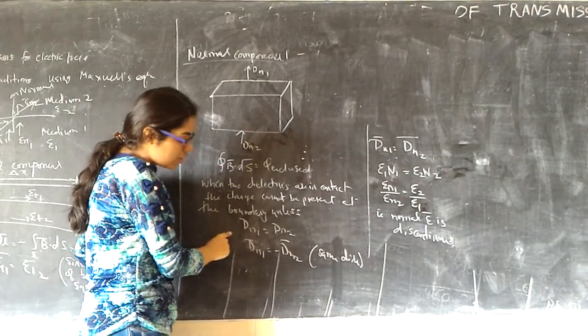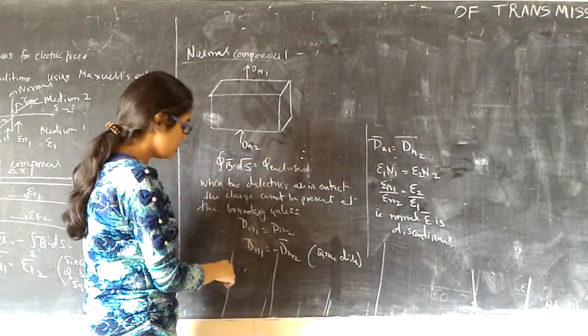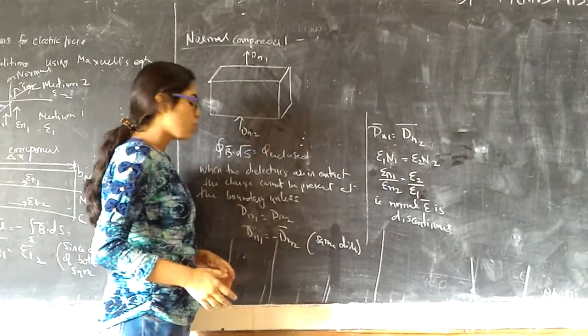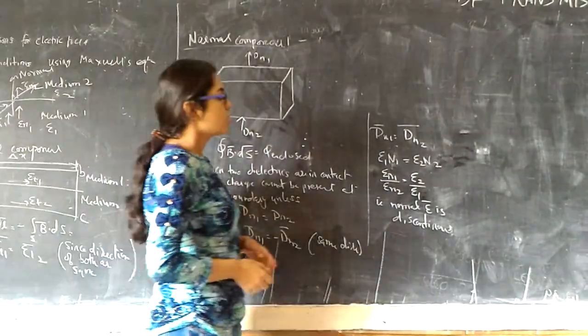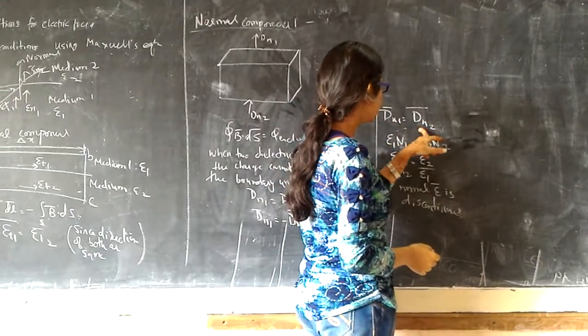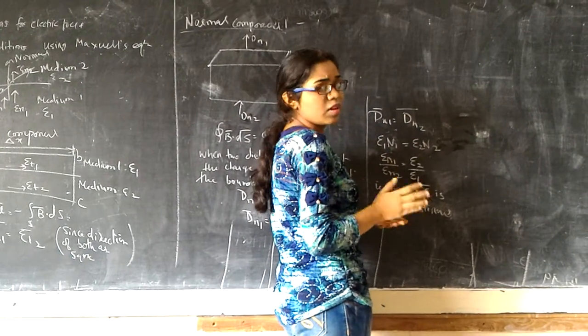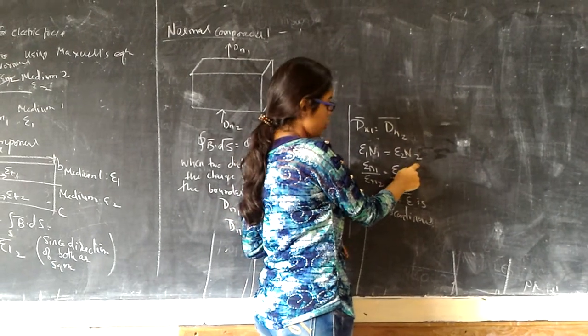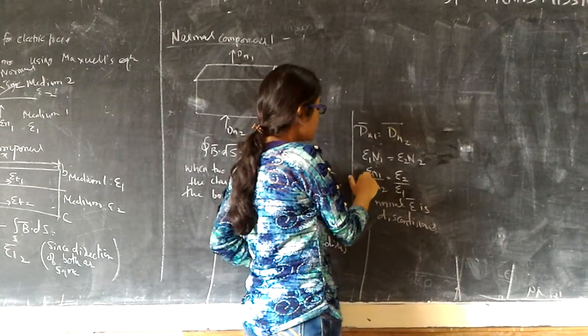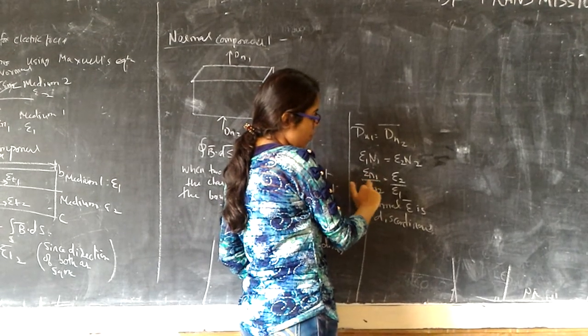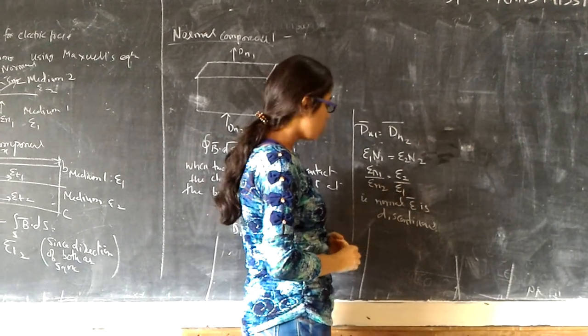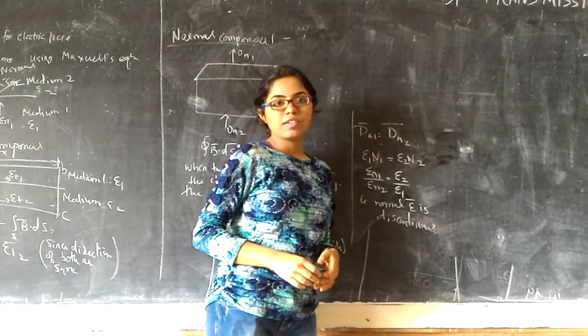That's why DN1 equals to DN2. Epsilon one EN1 equals to epsilon two EN2. Both have the same direction, so DN1 equals to DN2. We will see D one EN1 equals to epsilon two EN2. Further rearrangement: epsilon one EN1 equals to epsilon two EN2. That is the normal component relation. Thank you.